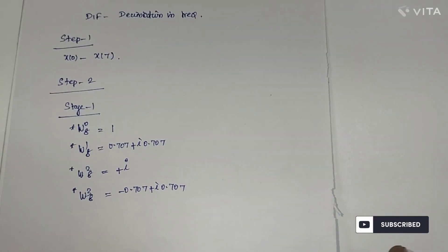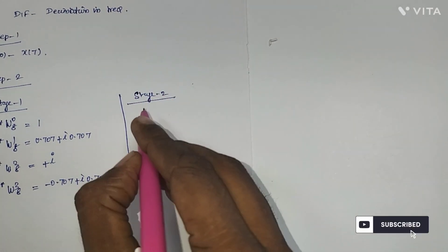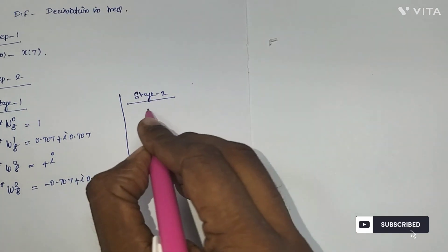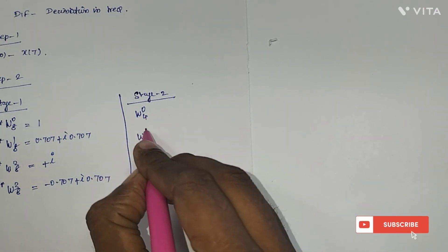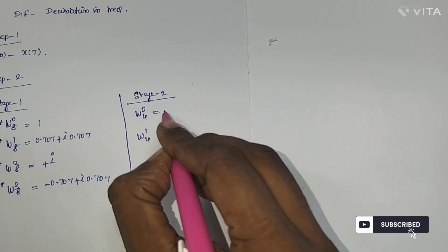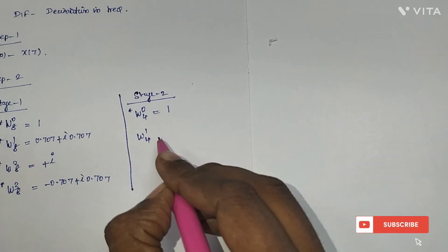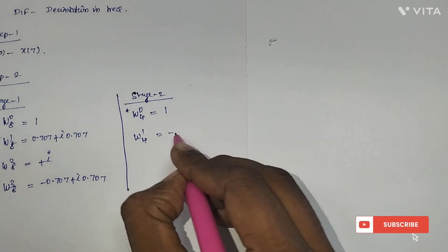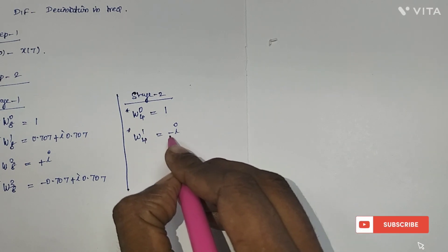In stage two, it is a four-point DFT. The twiddle factors are W0_4 and W1_4. The twiddle factor value of W0_4 is 1, and its conjugate is 1. The twiddle factor value of W1_4 is minus i, and its conjugate is plus i.